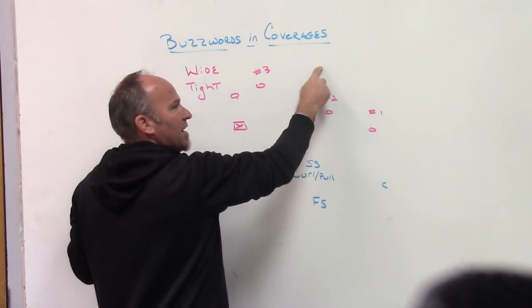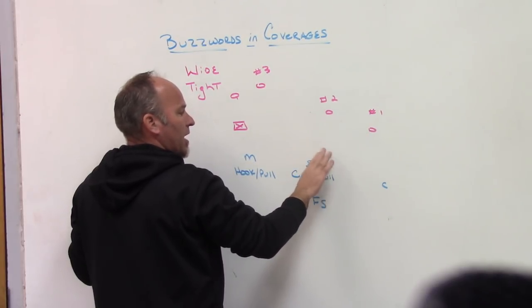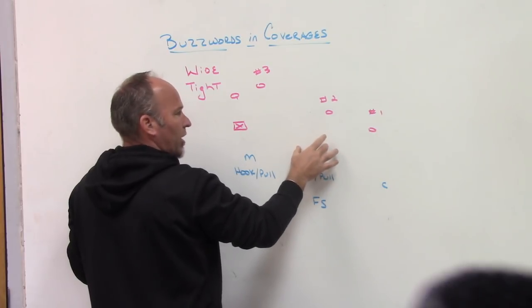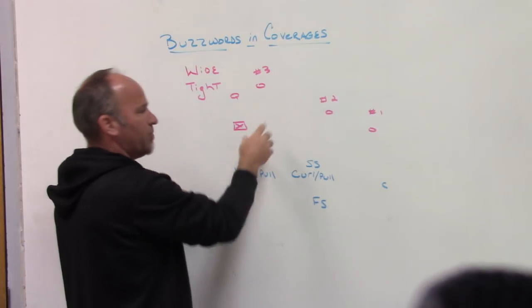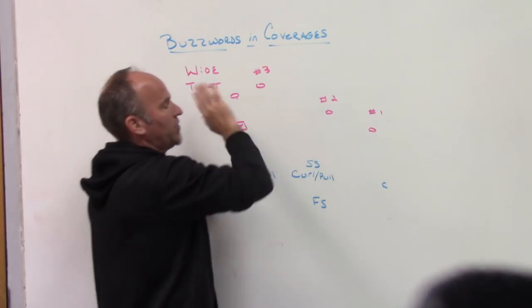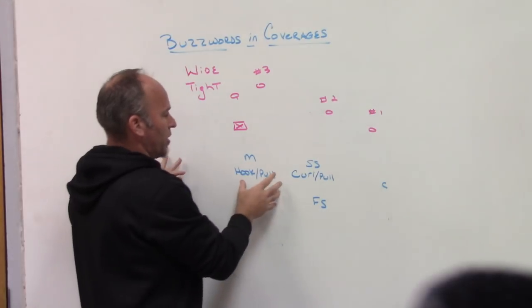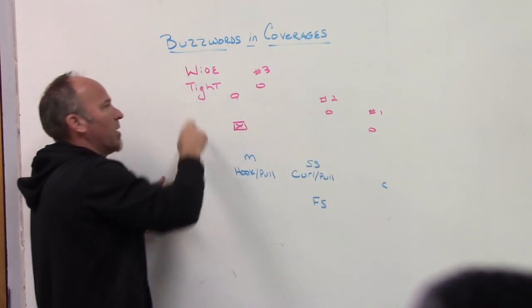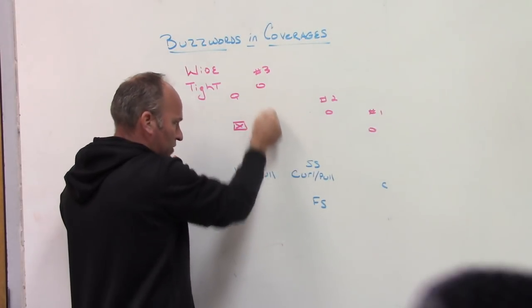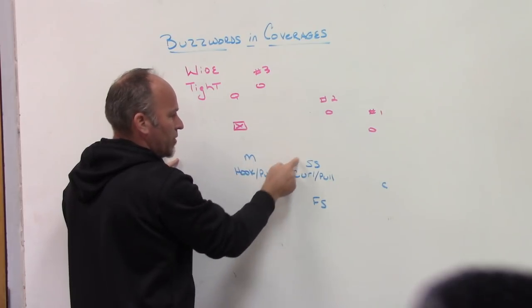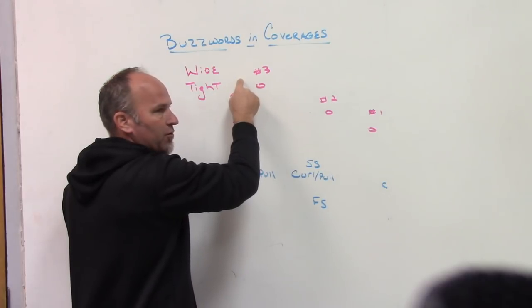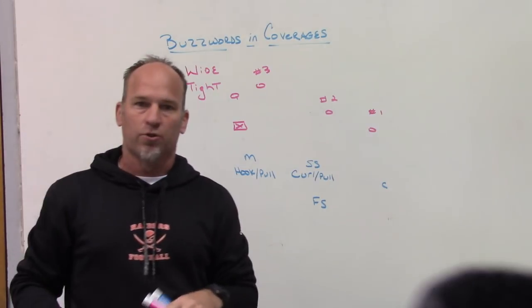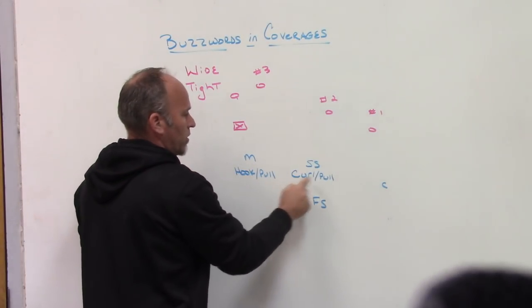If three is wide, the curl pull player should have pushed his drop to the flat and the hook player should have pushed his drop to the curl area. A lot of guys with three on that side in palms or two-read will make a push alert — the safety alerts to the mike: 'push, push' — meaning if three is wide, we're going to push the drops. So we use hook pull and curl pull to tell our guys that's your drop unless three pulls you elsewhere. And if three released tight inside the tackle box, you stay a hook player and a curl player and play off the vision of the quarterback.